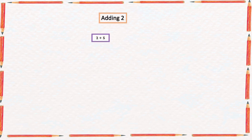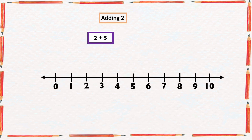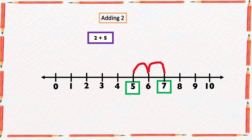Another example: find the sum of 2 and 5. With the help of a number line, we are going to start from the bigger number 5 and add 2 numbers forward: 1, 2. The arrow ended at 7. So the sum of 2 and 5 is equal to 7.